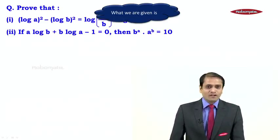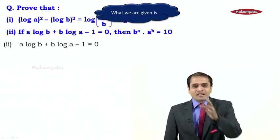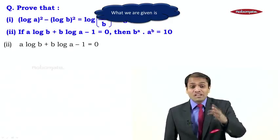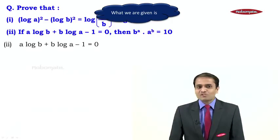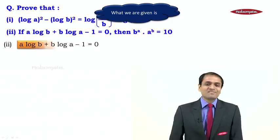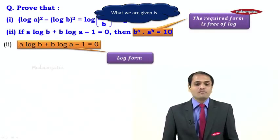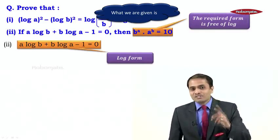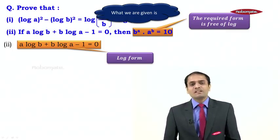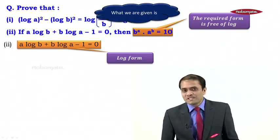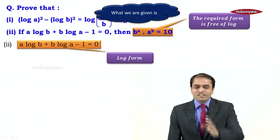Now for the second question, there is a given part and a to-prove part. The given part is: a·log b + b·log a − 1 = 0. The to-prove part is: b^a times a^b = 10, which is free of logarithms. So we need to convert the given equation into a form free of logarithms.